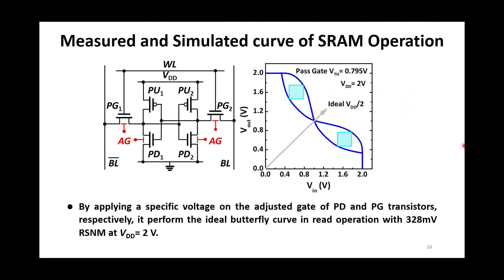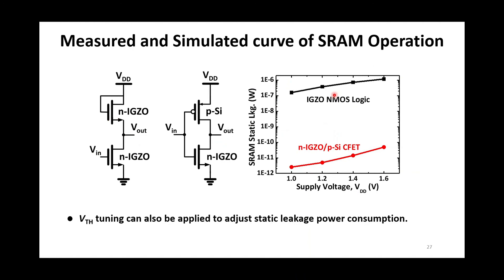Consequently, we can apply a specific voltage on pass gate and pull-down transistor to get the excellent butterfly curve, which has the symmetry and large left and right noise margin and ideal trip voltage. VTH tuning can also be applied to dynamically adjust static leakage power consumption in SRAM array.